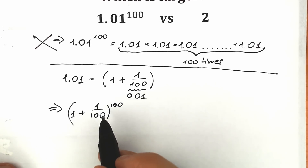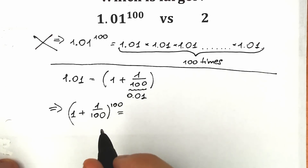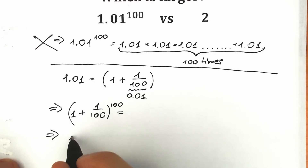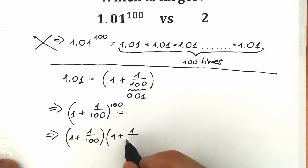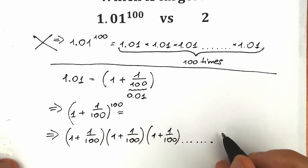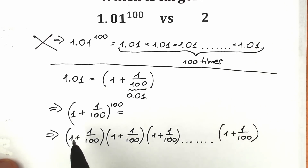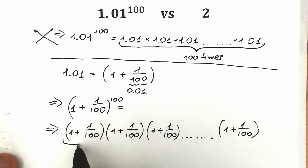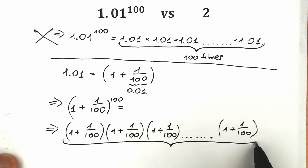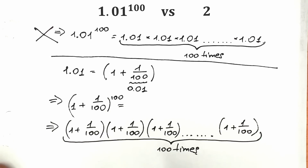Now let's write out what this expression gives us as a result. We have (1 + 1/100) times (1 + 1/100) times (1 + 1/100), and a lot of these expressions — the last one is also (1 + 1/100). We have 100 of these expressions, so we need to multiply it 100 times. We have expressed this expression as a product of many parentheses.